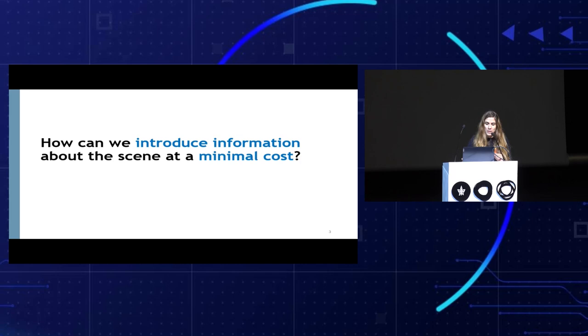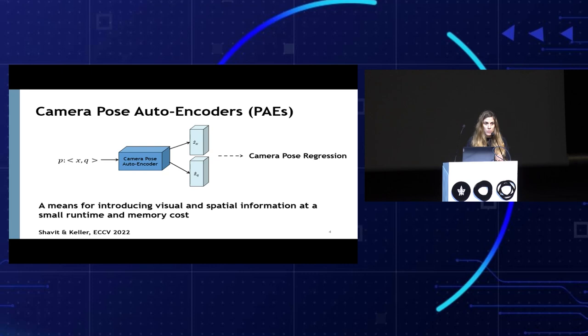But other localization methods achieve better accuracy. In this work, we asked ourselves how can we introduce information about the scene — like the features I just mentioned — at a minimal cost while maintaining the advantages of APRs in terms of simplicity, run times, and memory cost. For this purpose, we developed Camera Pose Autoencoders, or PAEs — a means for introducing visual and spatial information at a small runtime and memory cost to improve the performance of APRs.